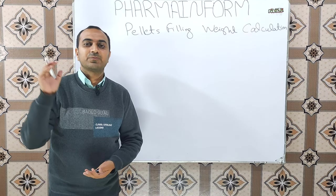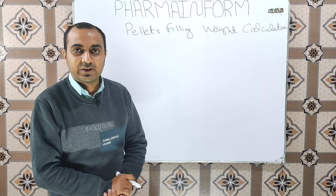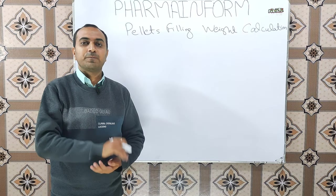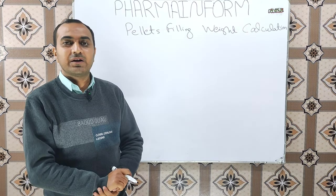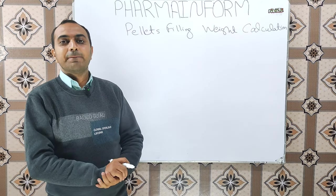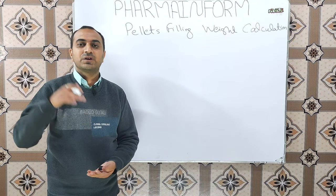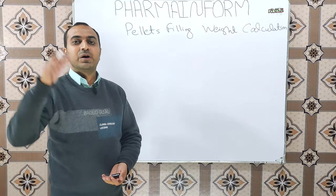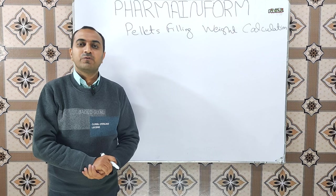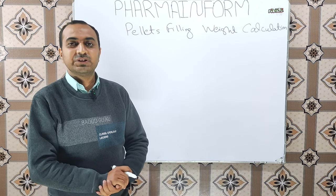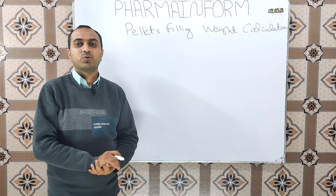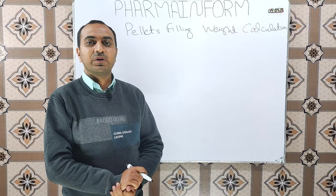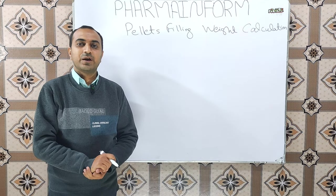Hard gelatin capsule shells are used to fill powder, granules, or pellets. Most of these pellets are enteric coated, and these enteric coated pellets are manufactured by third parties. Pharmaceutical industries purchase these enteric coated pellets from third parties and use them for refilling hard gelatin capsule shells. The most important question is how we calculate the weight of these pellets for filling various potencies of our product. In this video we will discuss this calculation using the most commonly used API, which is S-omeprazole.